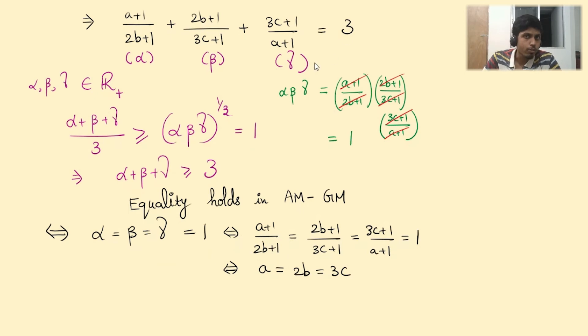But now how will I solve for it? Because if I go back and substitute this in this equation, you will get LHS = RHS = 3. Nothing significant or nothing particular to A, B, and C.